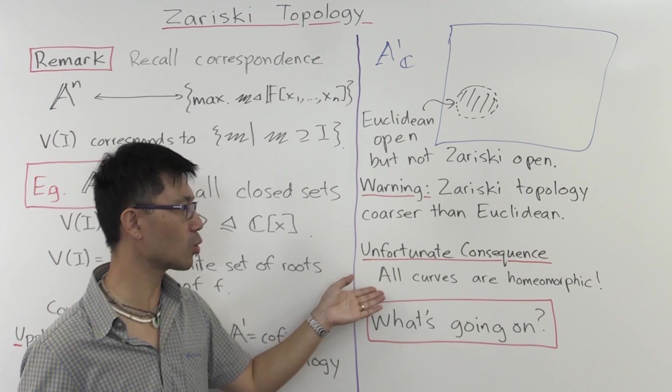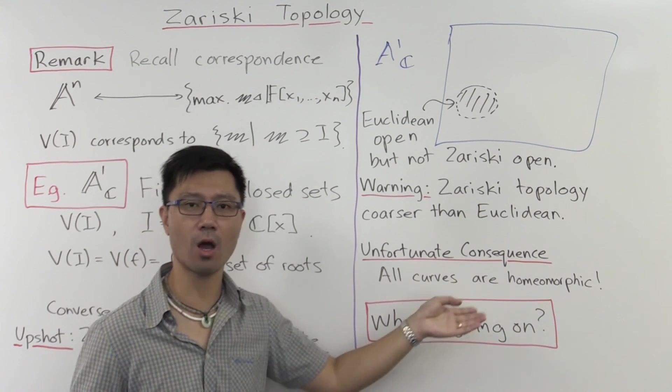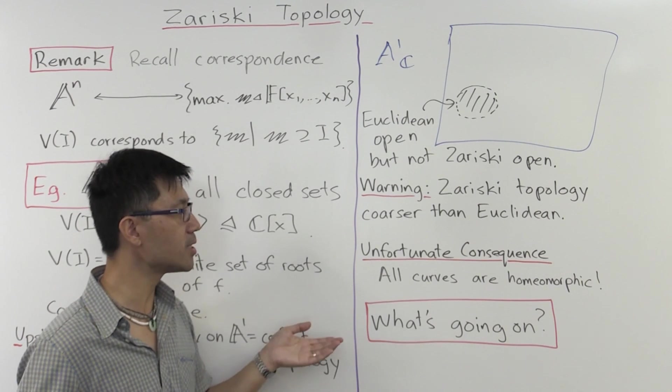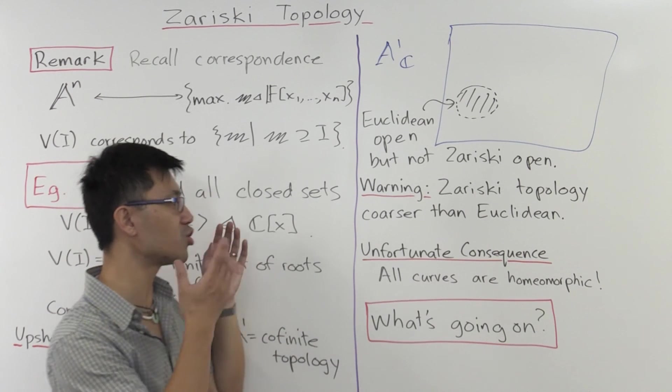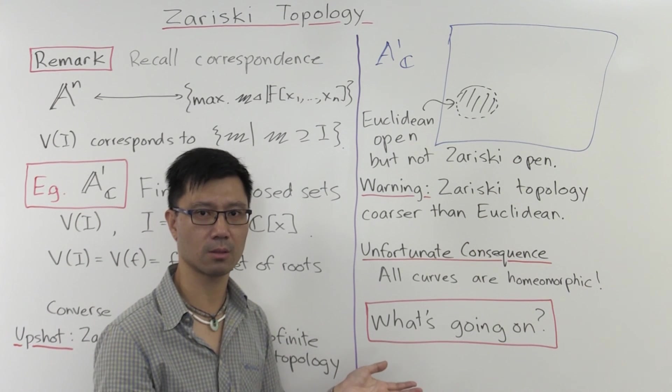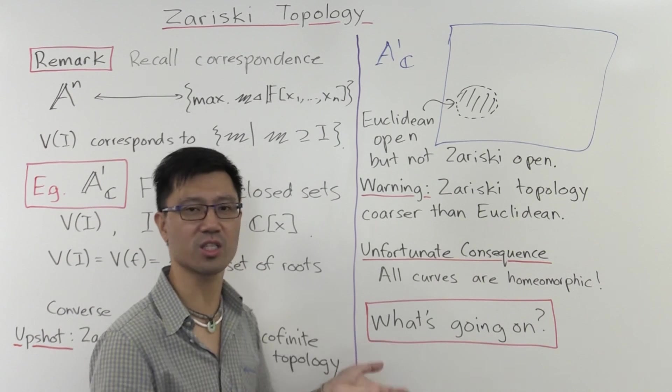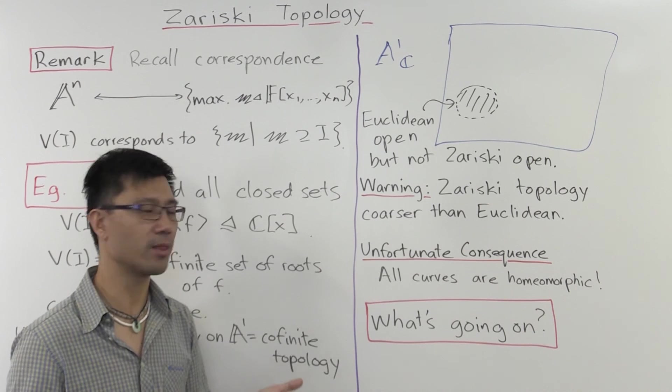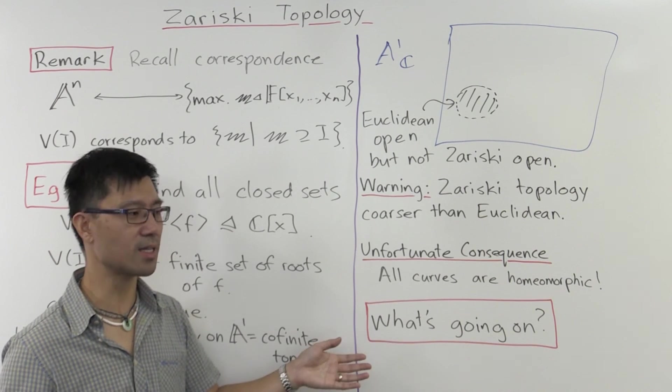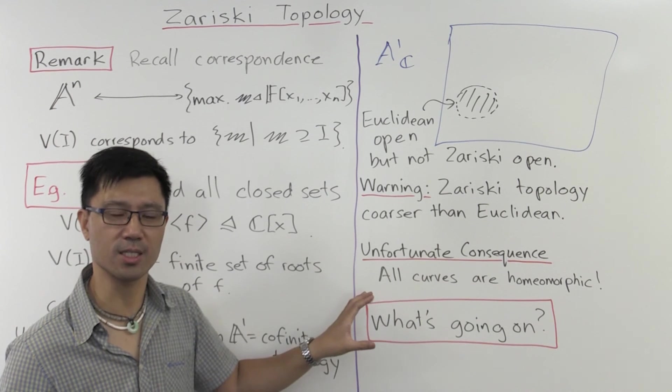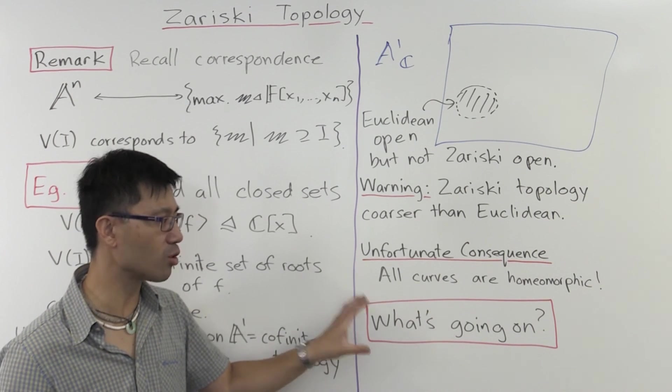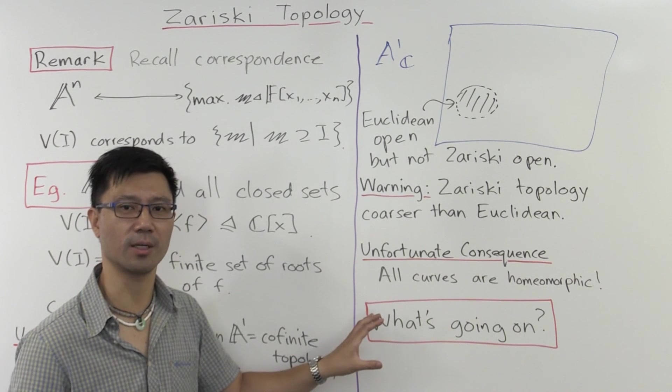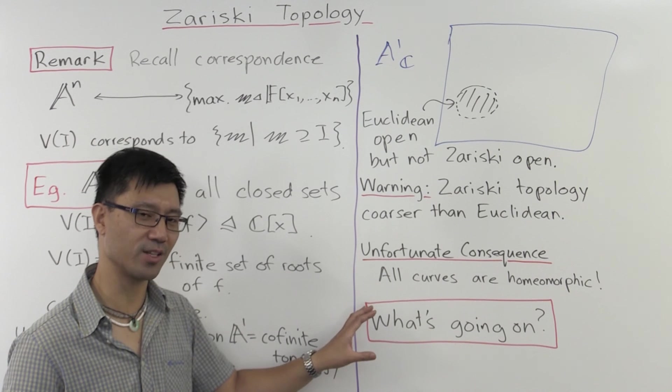And what about this unfortunate consequence here, that all curves are homeomorphic? So what's going on? The point is that the topology doesn't capture all the geometry of varieties. There's more geometry than just the topological space. If you wanted to find what is the geometric structure there, there's more than just the topology. And what is that? Well, strangely enough, that extra geometry is encoded in the algebra of the coordinate ring. It's actually the ring structure of that coordinate ring. I hope you enjoyed this adventure in pure mathematics.